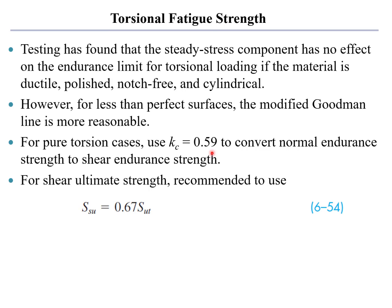What we can do is we can calculate a fully corrected endurance strength using the torsional or shear loading correction factor, Kc equal to 0.59, which takes our normal endurance strength and converts it to a shear endurance strength. But you also know that you're going to need the ultimate tensile strength in order to find the constants for Baskin's law. And the ultimate tensile strength in shear is about 67% of the ultimate tensile strength in uniaxial loading.